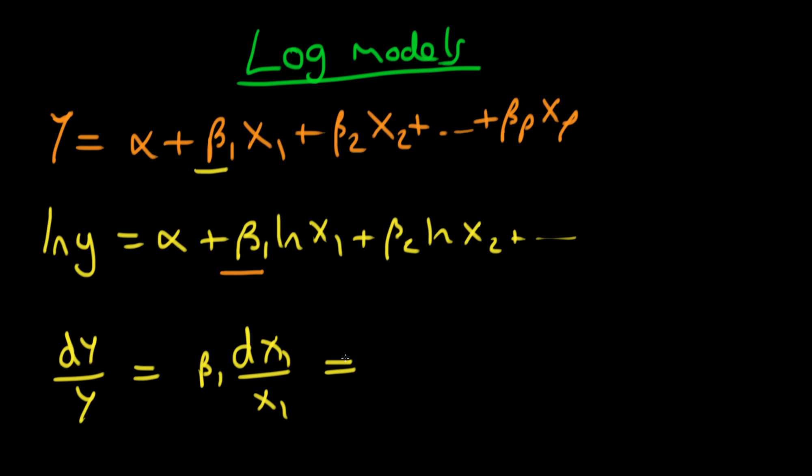If we rearrange this, then we get an expression for beta 1, which is that beta 1 is equal to x1 over y times dy over dx1. And what does this actually mean? Does this have any significance?